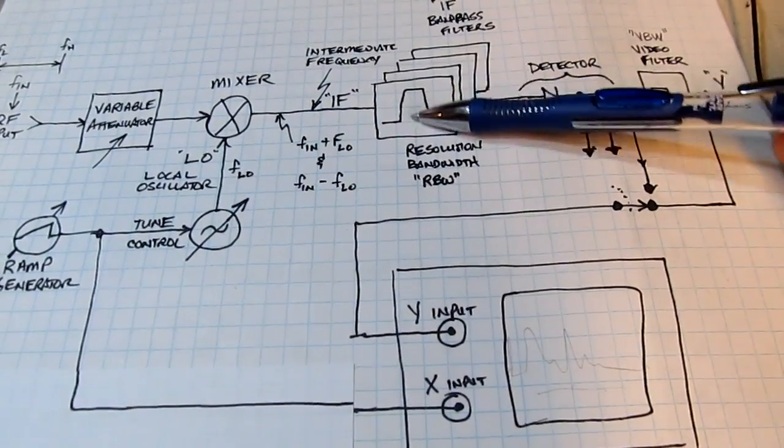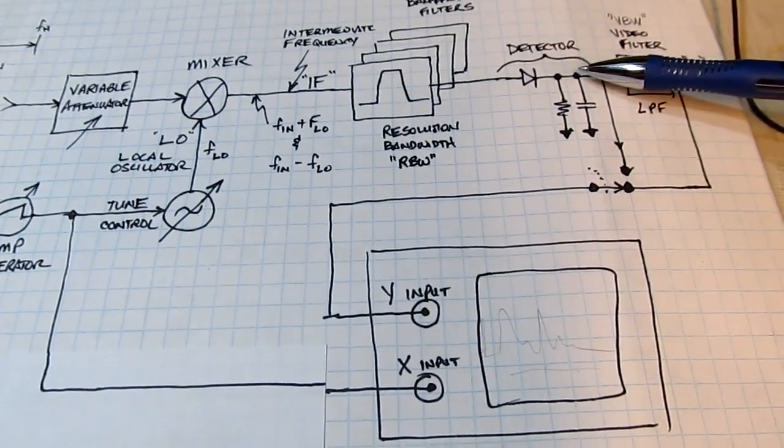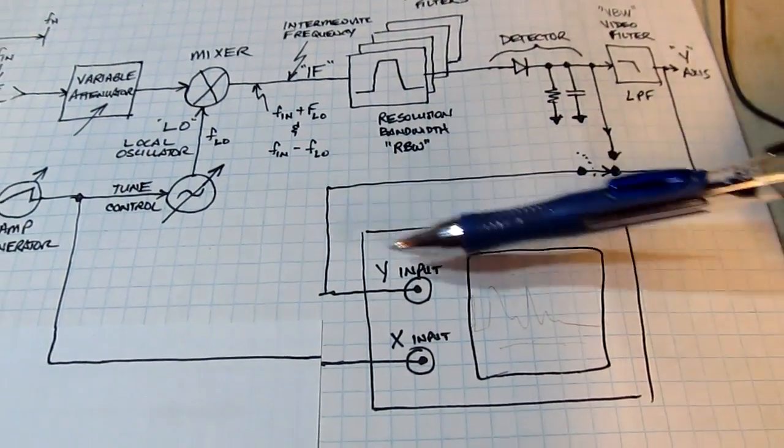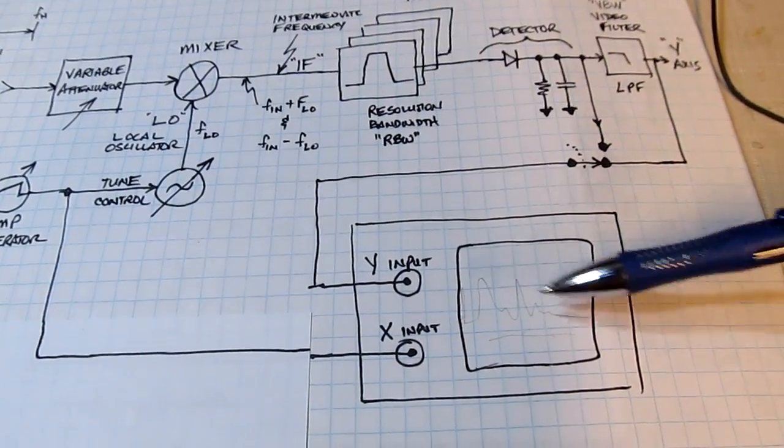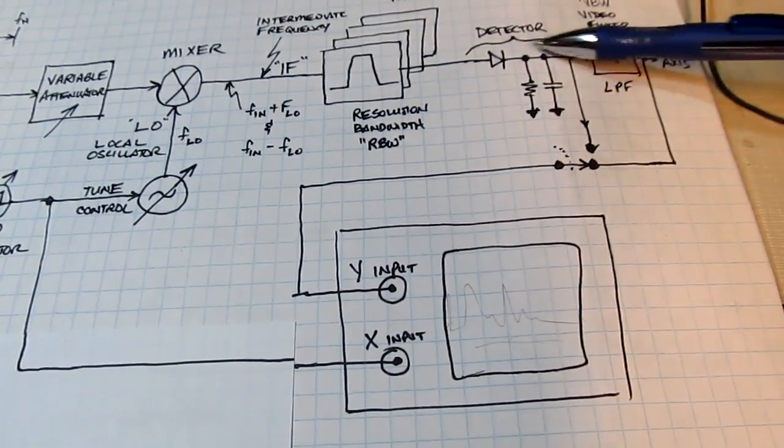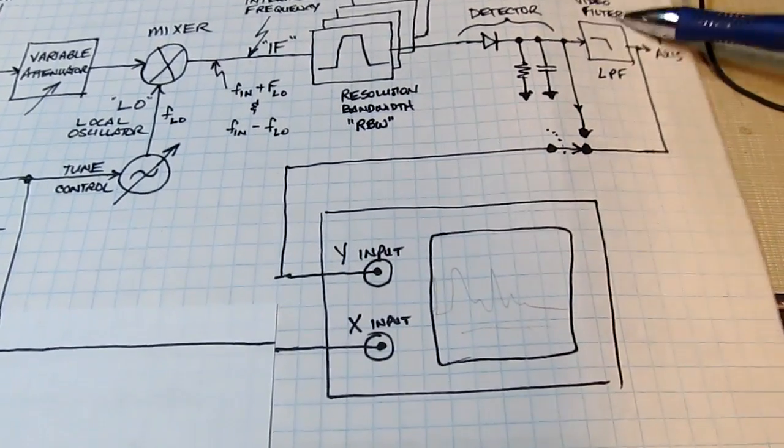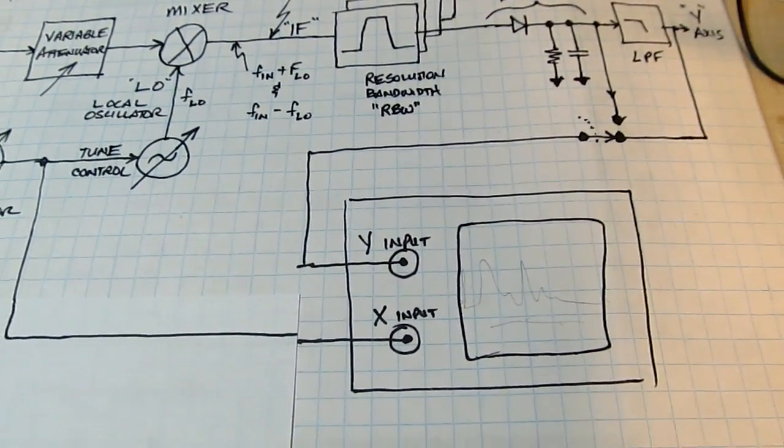The power that's in that filter or detected in that filter is detected by a detector and that's essentially what is measured on the screen of the spectrum analyzer is the amplitude of the power within that resolution bandwidth. Optionally the output of that detector can be filtered before it's displayed and that's called the video bandwidth filter or video filter.